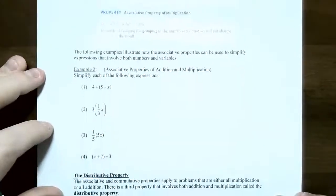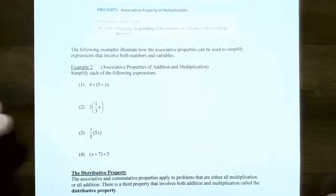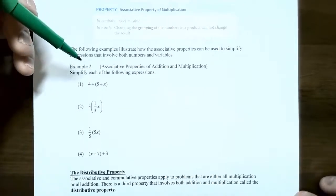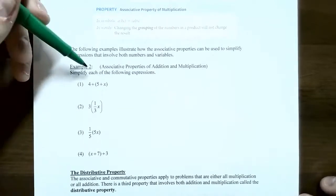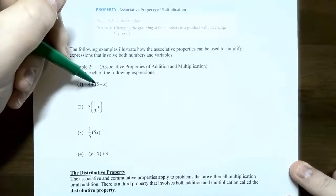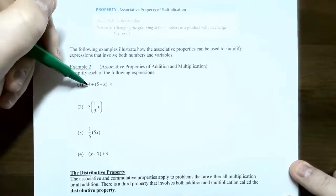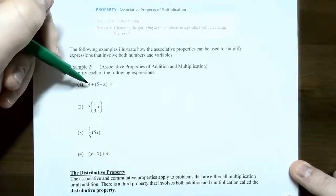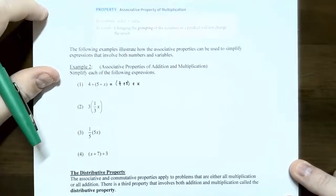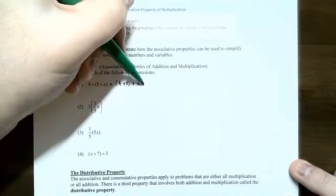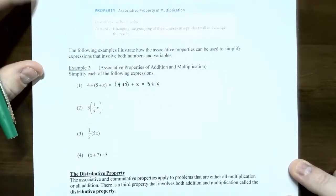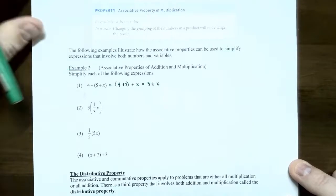Example 2: associative properties of addition and multiplication — simplify each expression. Number 1: 4 plus the quantity (5 plus x). I can combine the 4 and the 5, so let's group those together: (4 plus 5) plus x outside the grouping. Four plus five gives me 9, and then I have x. This is called the associative property of addition because we grouped 4 and 5 together since we're just doing addition.